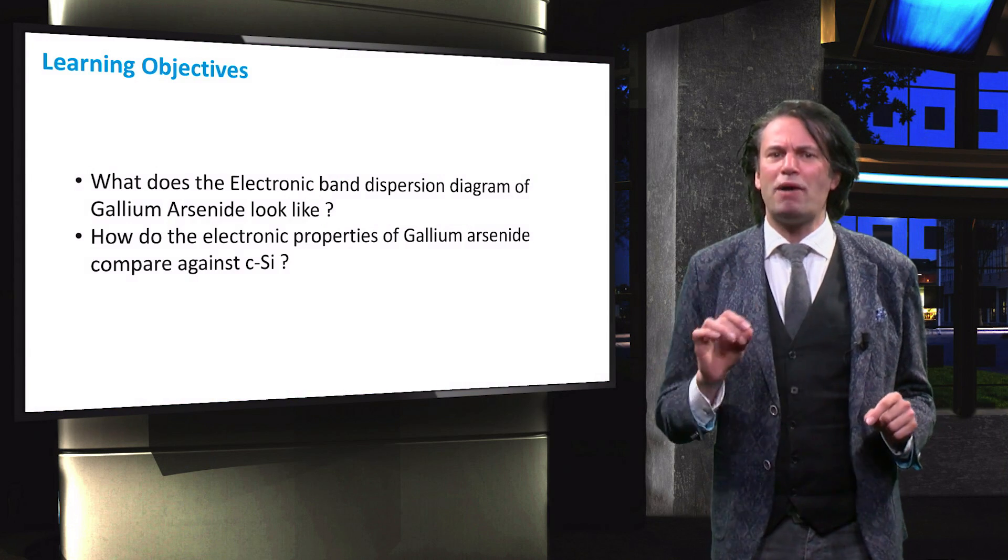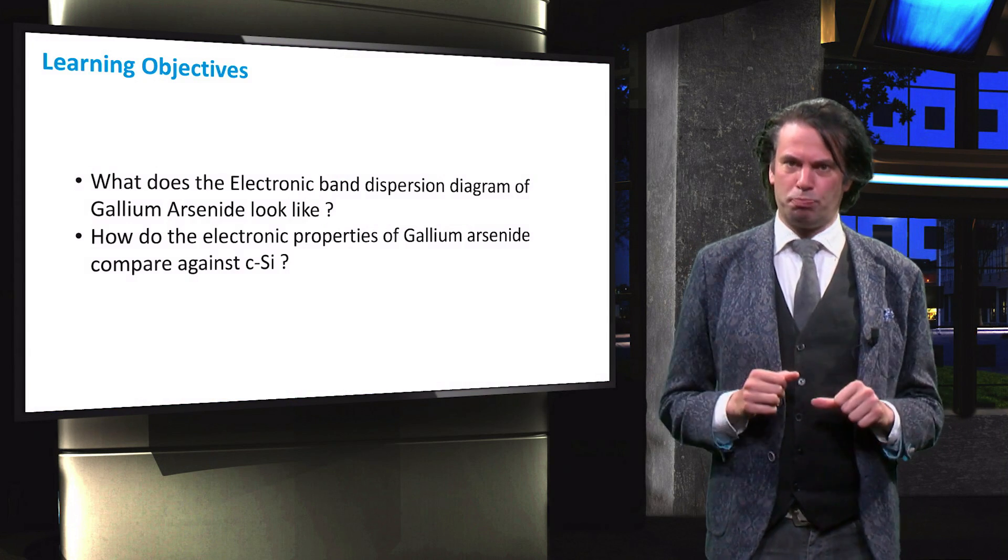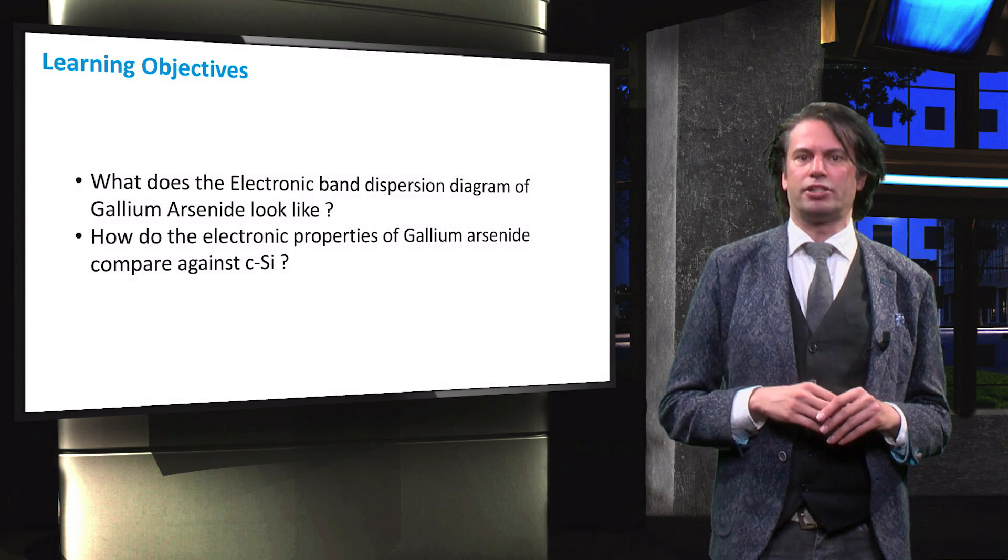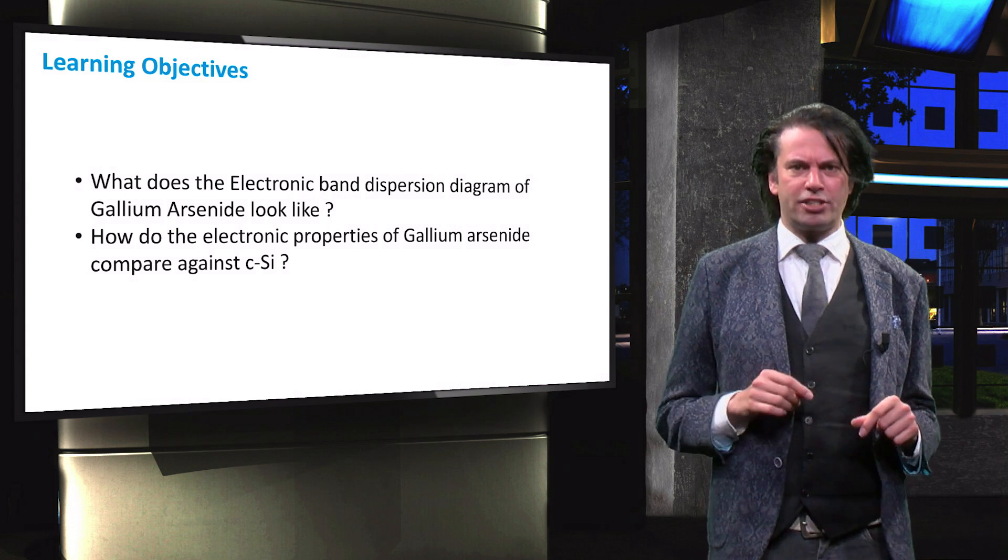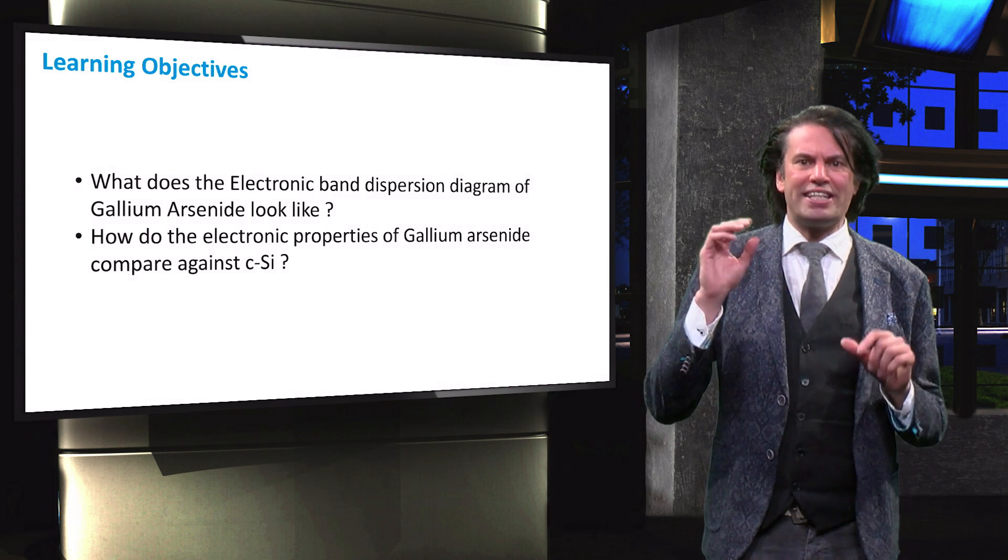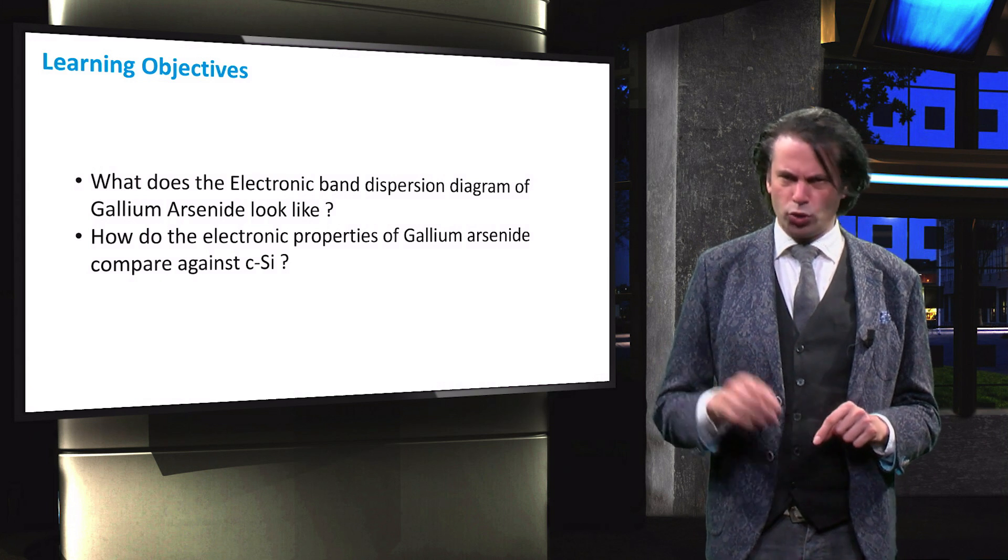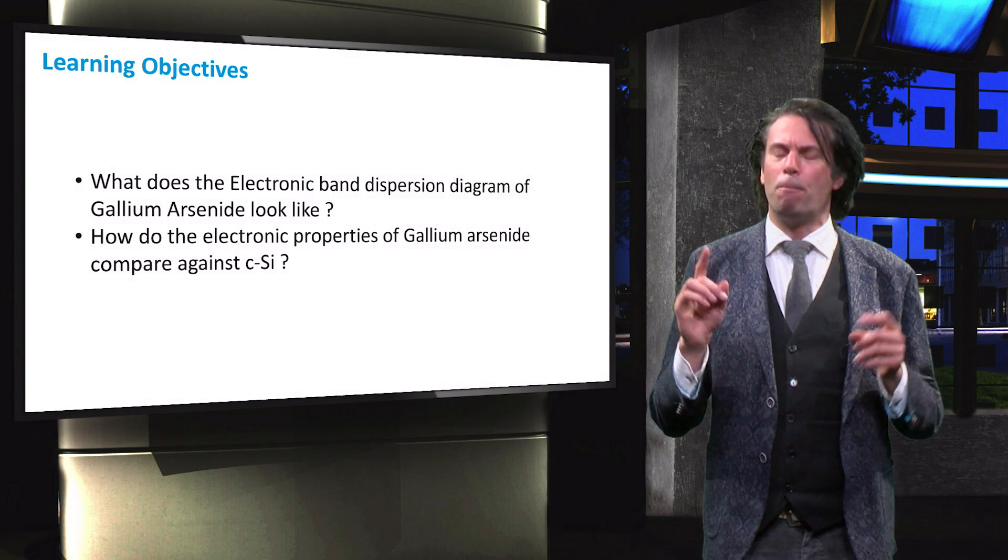To that end, you will learn about the electronic band dispersion diagram of gallium arsenide. We will also look at the absorption characteristic of gallium arsenide and compare it with that of crystalline silicon to understand the difference between both materials.